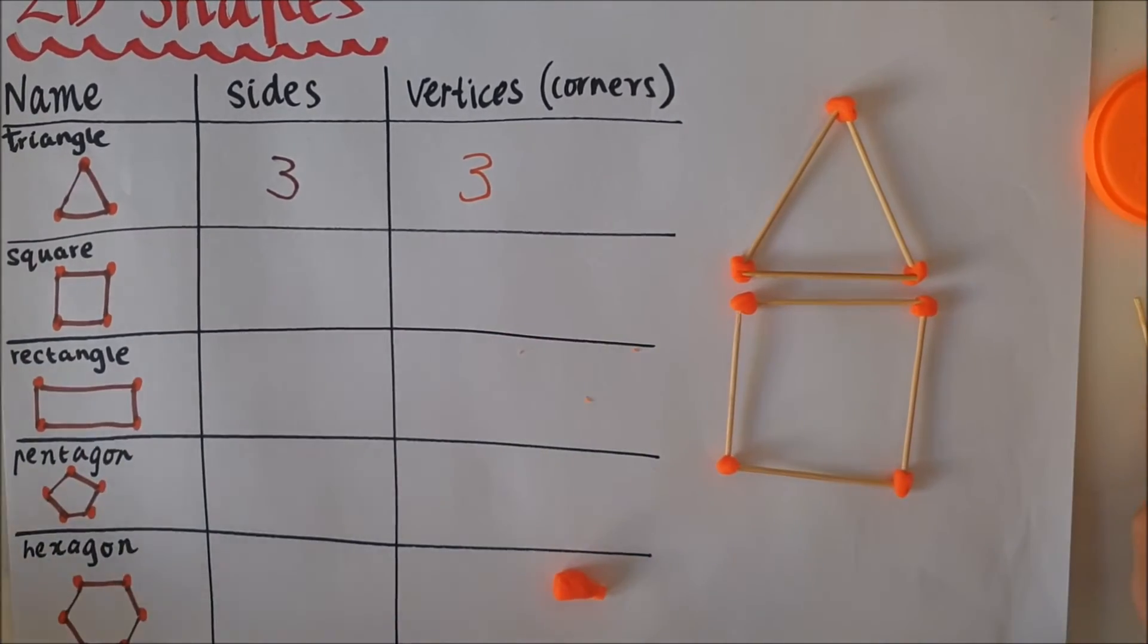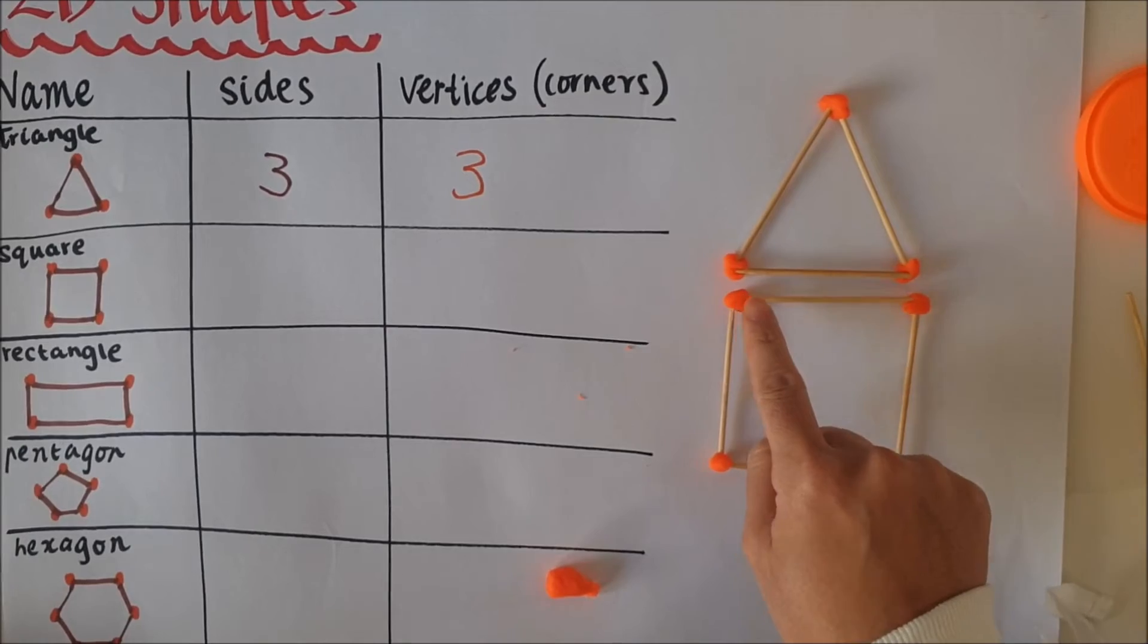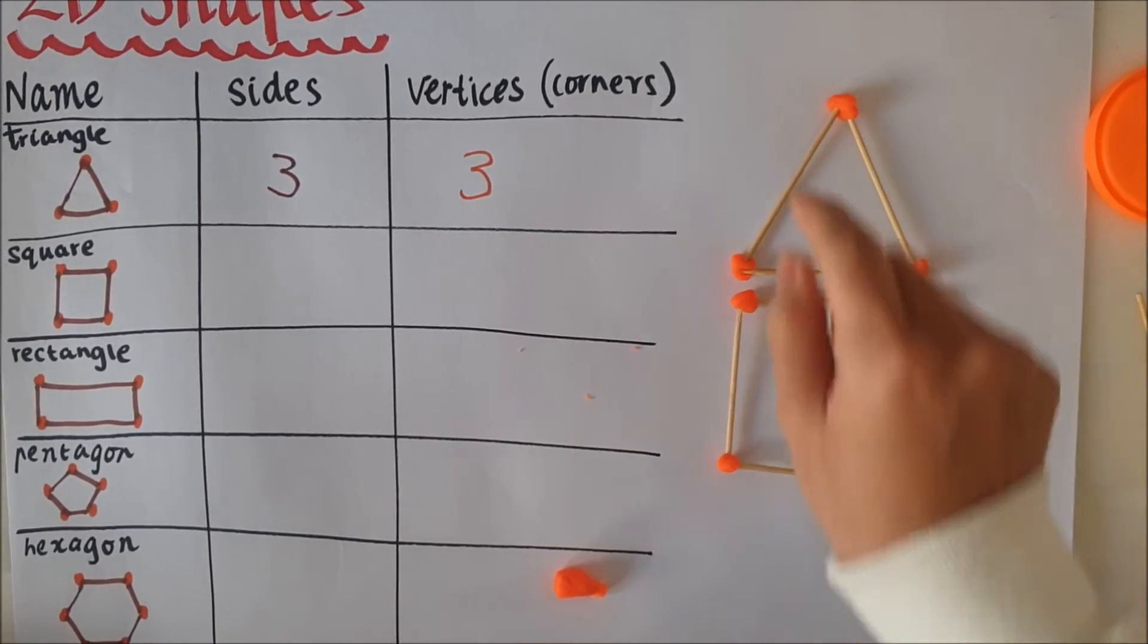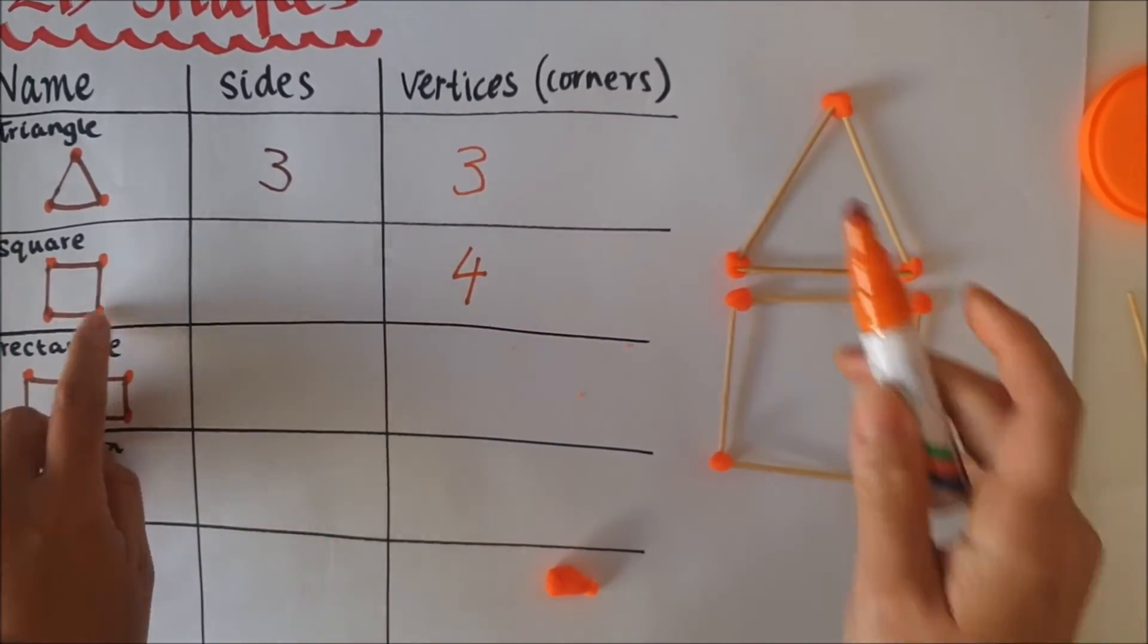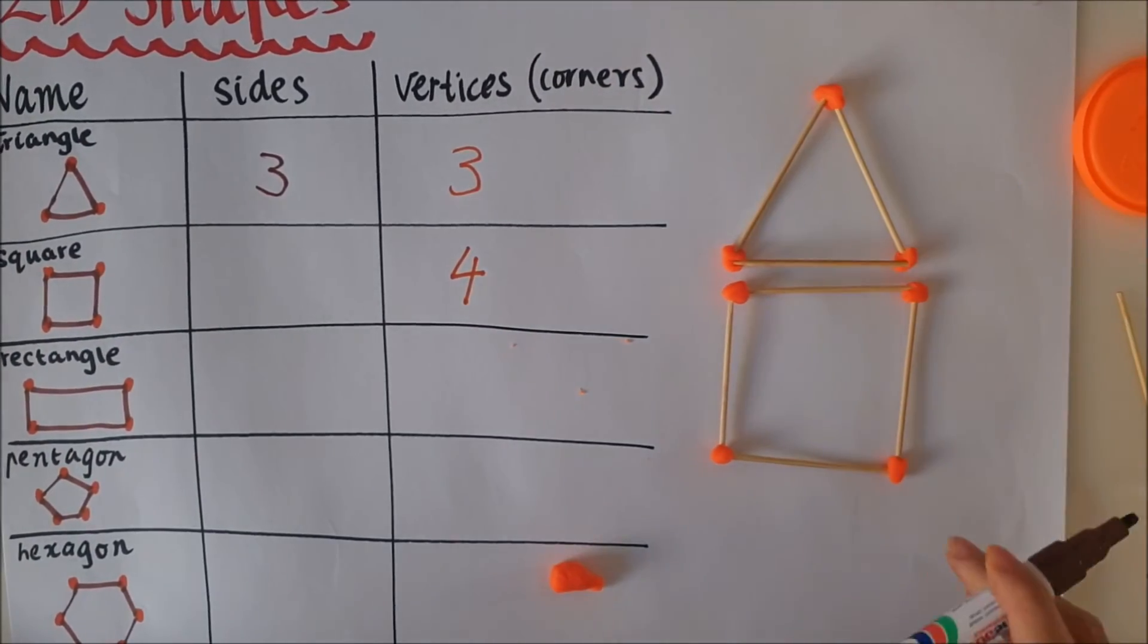Alright let's count the vertices. One, two, three, four. So I'm going to write four. So in my picture one, two, three, four. And now the sides.